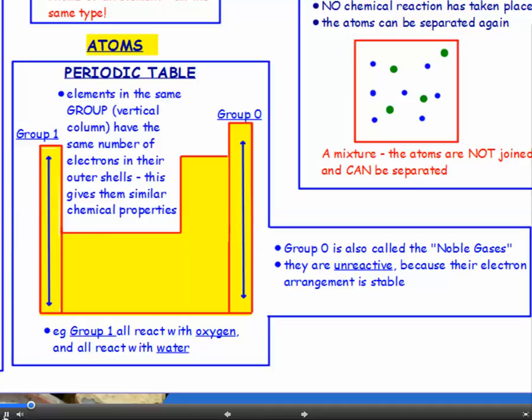Group 0, sometimes also called the noble gases, these are all unreactive because their electron arrangement is stable.